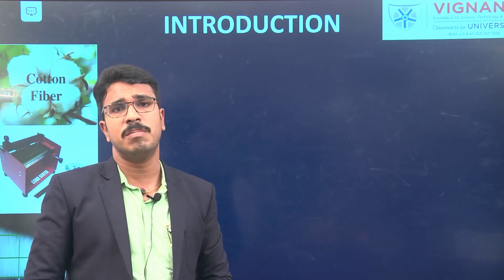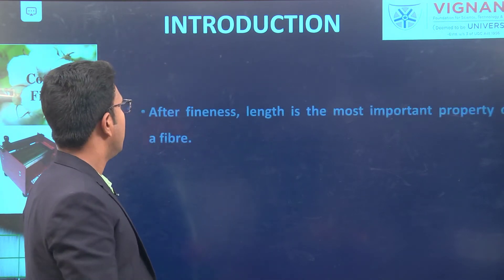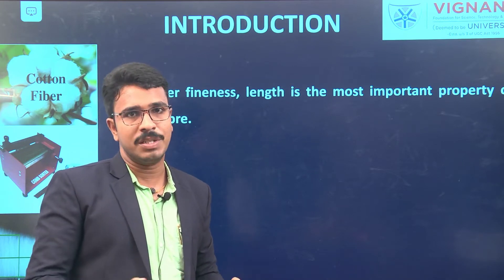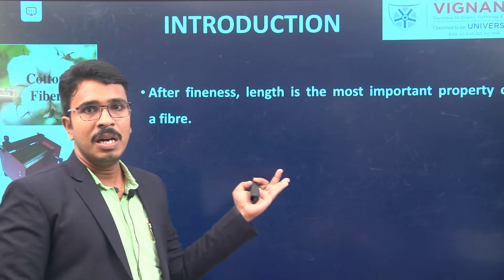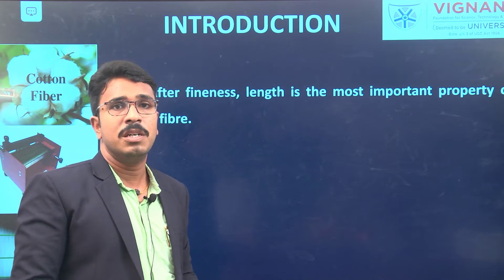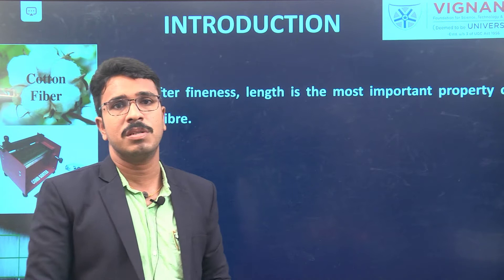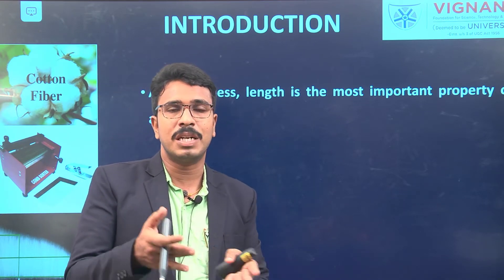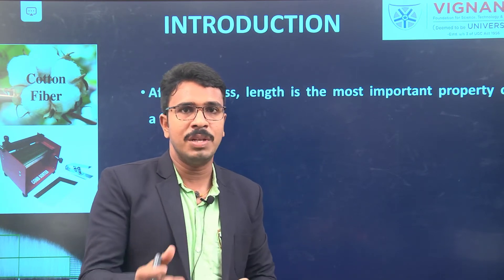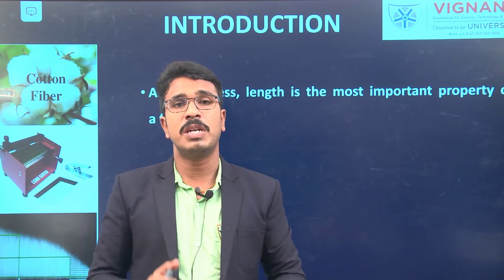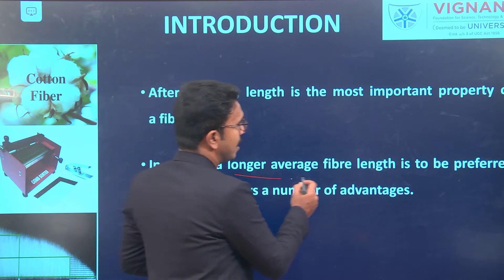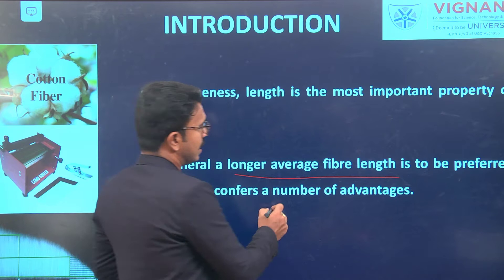In the introduction, we discuss what fiber length is, its importance, and how it influences other fiber parameters. Fiber fineness is another important fiber parameter we will discuss afterward. Both fiber fineness and fiber length are important properties of a textile fiber that need to be measured before starting the yarn manufacturing process. In general, a longer average fiber length is preferred because it confers a number of advantages.